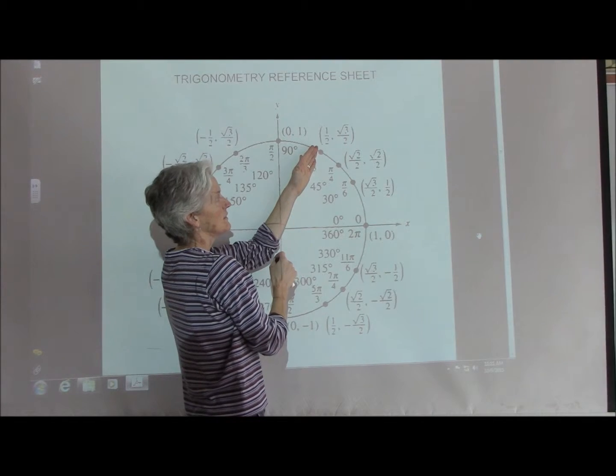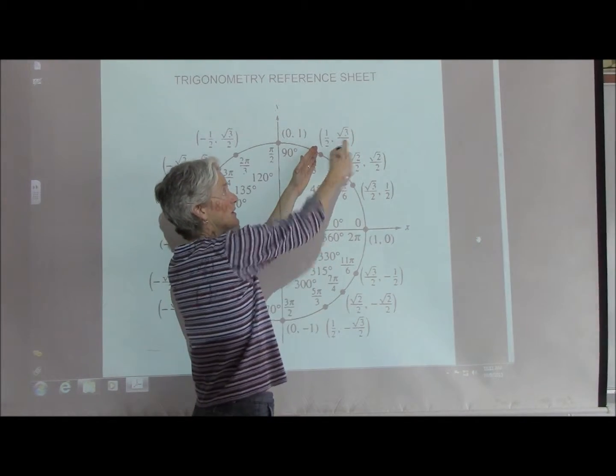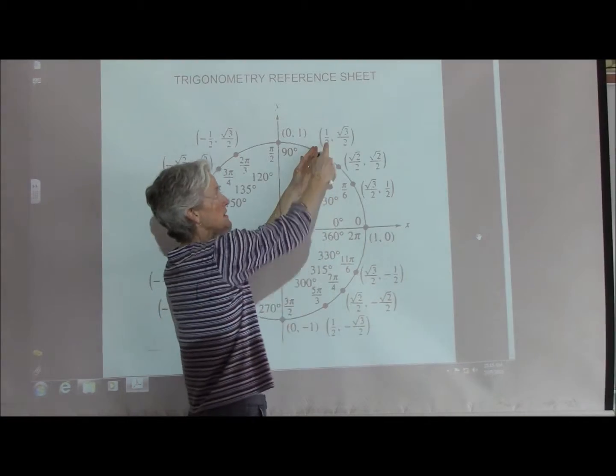60 degrees. Sine is going to be the y, square root of 3 over 2. Cosine is going to be the 1 half.